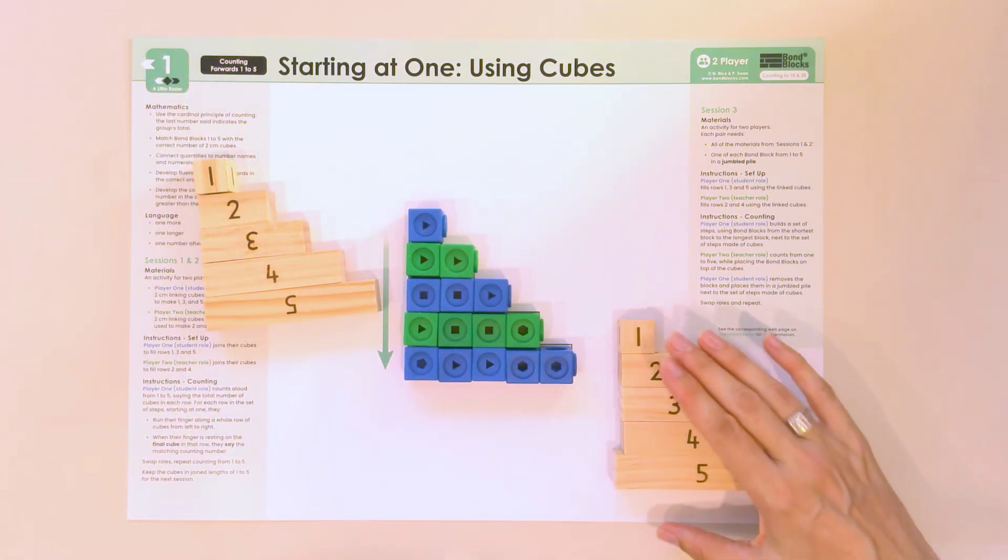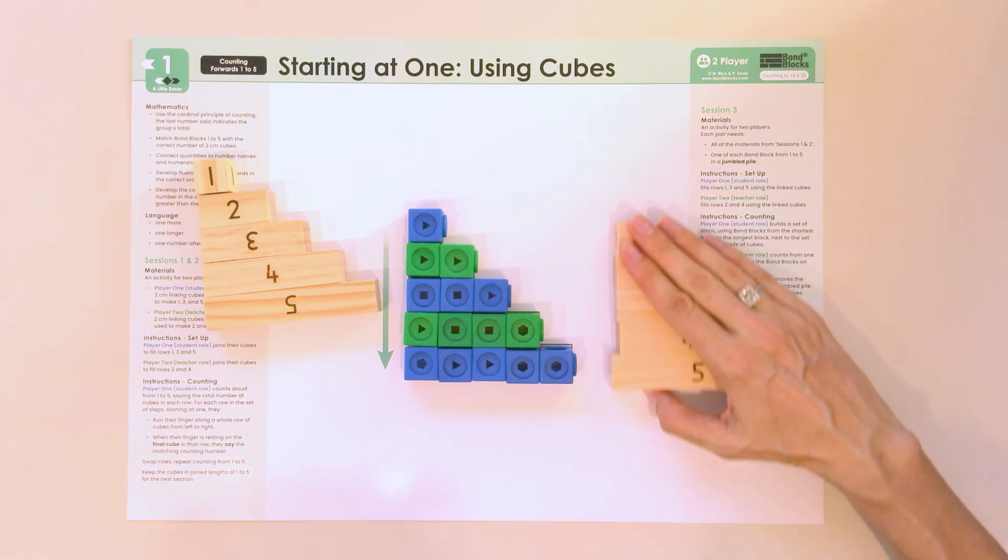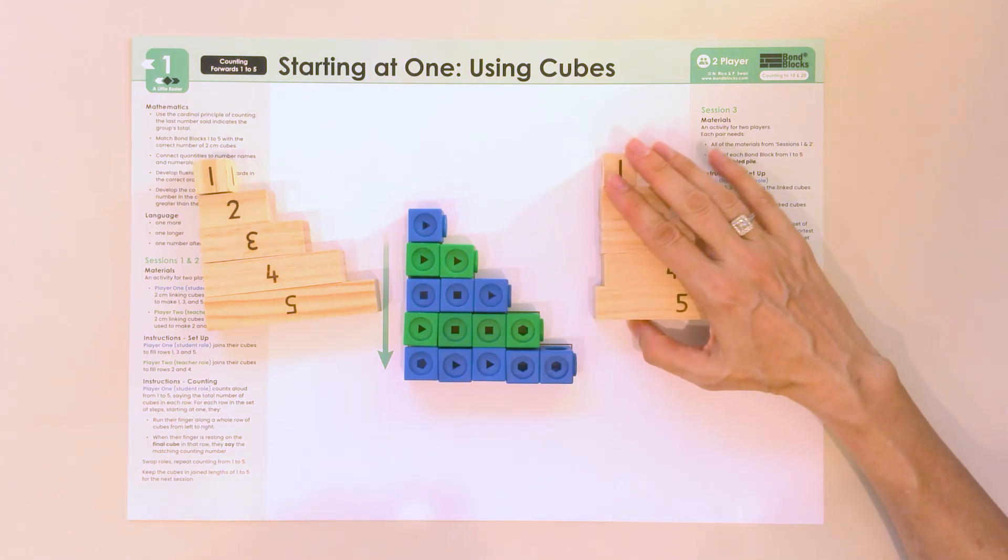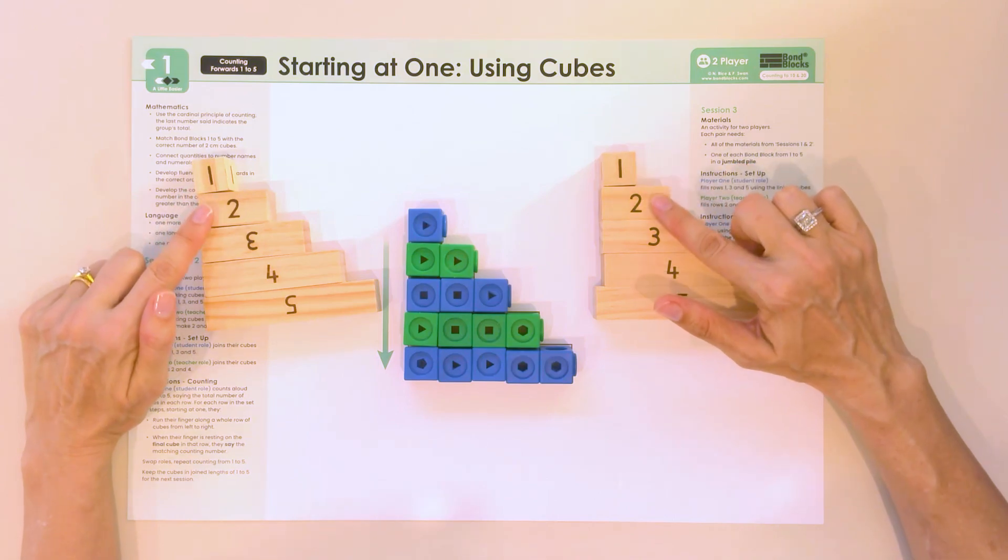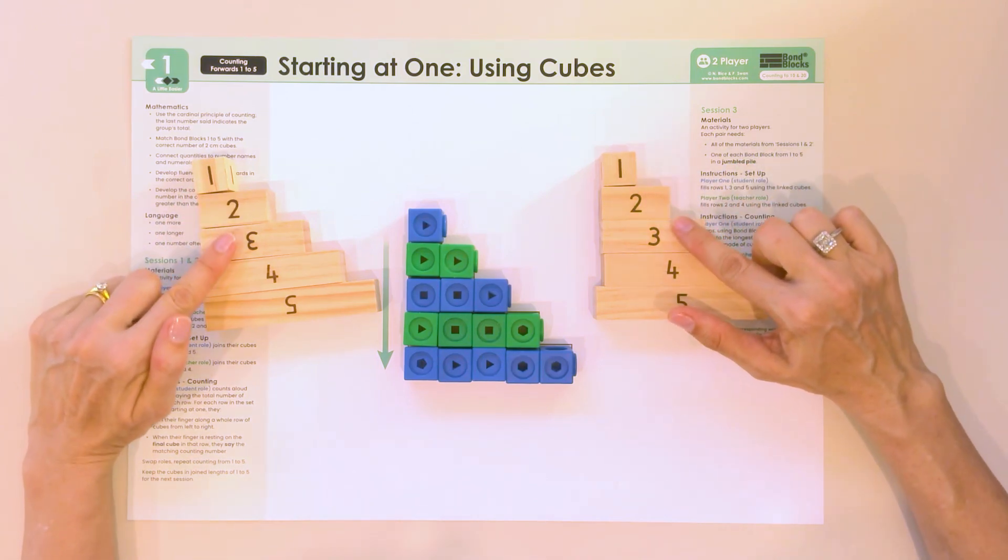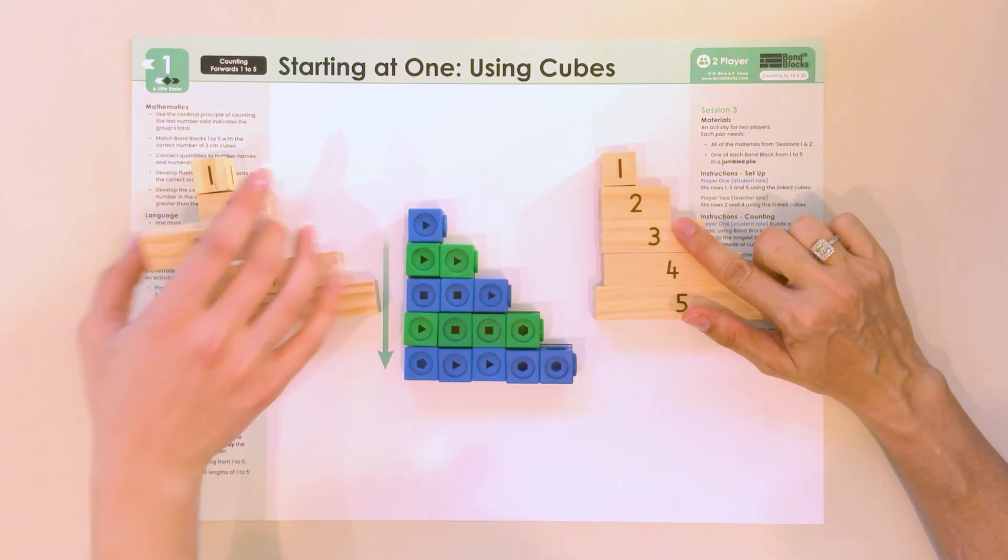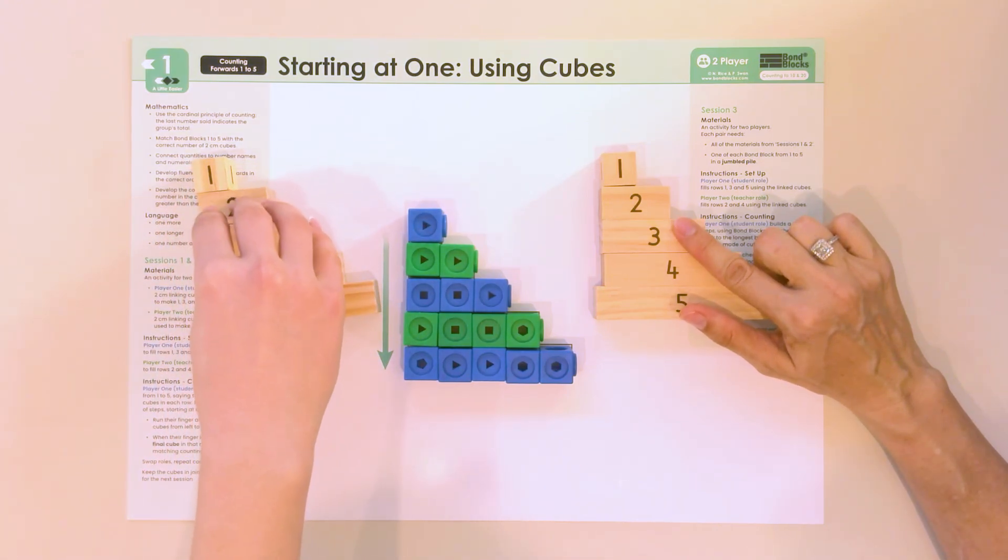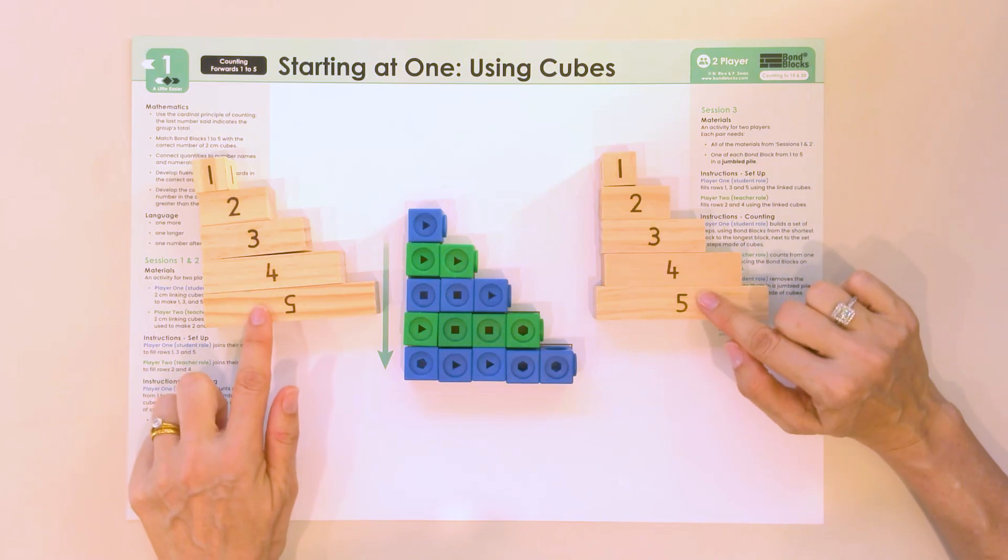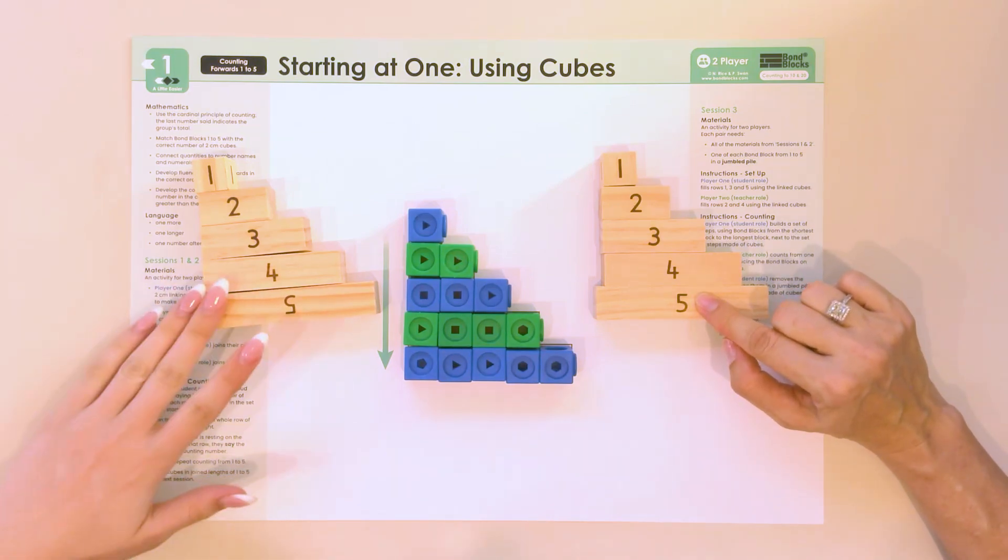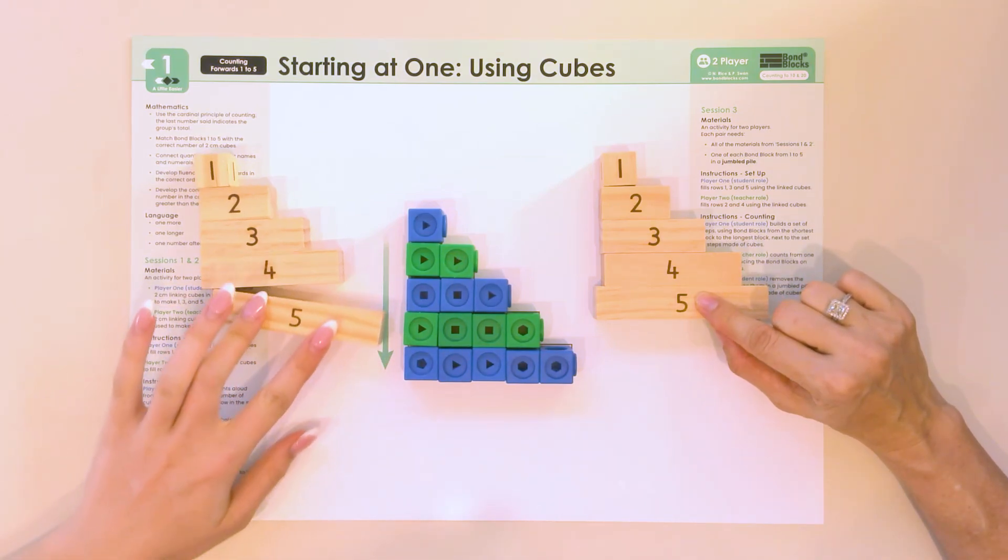Great, so you've built the set of steps. Now, it's my job on the other side to check all your numbers. So, I'll put them near each other. The ones are good. The twos are good. Oh, can you fix up your three? Thank you. Your four's good. And, oh, can you see your five? Excellent.